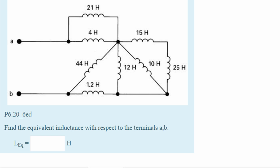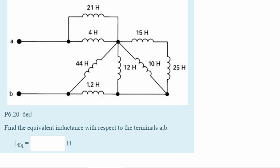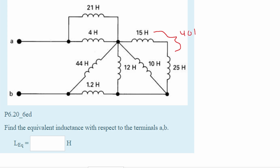Starting from the far right, this inductor and this inductor are in series because the current just flows through them directly. So we can add them together, and if we add both of these inductors together we get 40 Henrys.